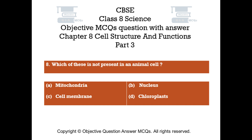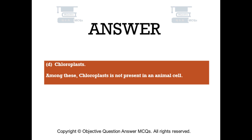Question number 8: Which of these is not present in an animal cell? — Option A: Mitochondria, Option B: Nucleus, Option C: Cell membrane, Option D: Chloroplasts. The right answer is Option D: Chloroplasts. Among these, chloroplasts is not present in an animal cell.